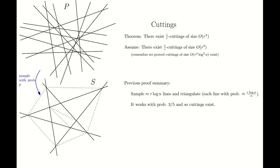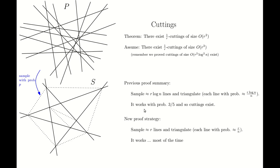Let's look at the previous proof strategy. We sample roughly r·log n lines and then triangulate them. This will create roughly r²·log²n triangles. And then we argue that with some positive probability, all those triangles will have a low crossing number — in other words, the number of lines intersecting each triangle will be small.